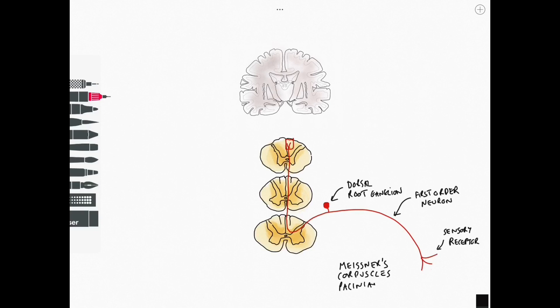Information of course flows into the dorsal horn of the spinal cord and the types of sensory receptors could be Meissner's corpuscles, Pacinian corpuscles or if that information happens to be proprioception then it would be information coming through the muscle spindle fibers.